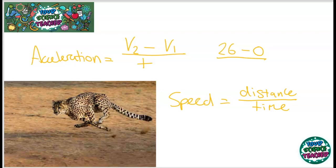This means that a cheetah's acceleration would be 26 divided by 3, which is 8.6 meters per second squared. That's the unit for acceleration.